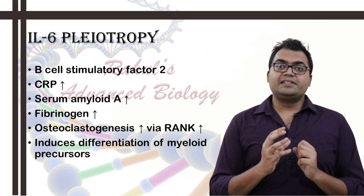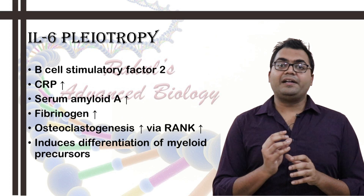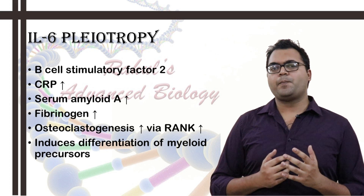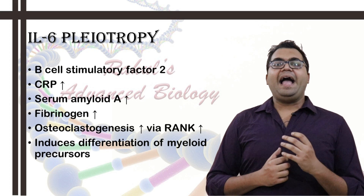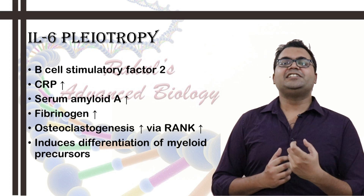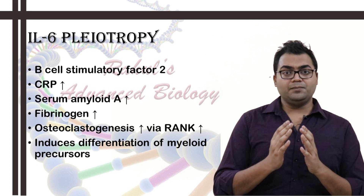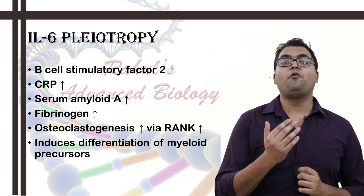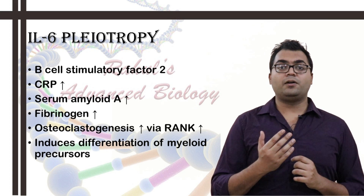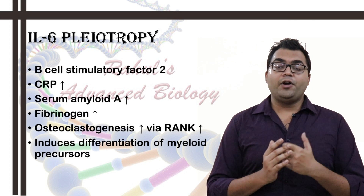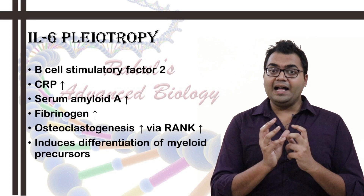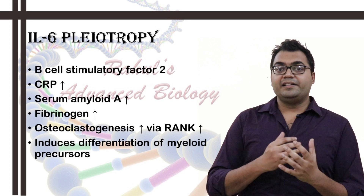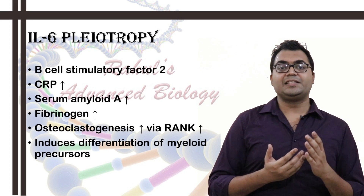How does it all begin? Interleukin-6 is at the epicenter of the cytokine release syndrome or cytokine storm. In the 1960s, scientists were baffled to find out about interleukin-6, and they also termed it the B-cell stimulatory factor 2. Some scientific groups also termed it interferon beta-2, which was a novel interferon at that point of time. But later on, scientists disagreed and vehemently proved that IL-6 doesn't possess any kind of interferon activity via experiments with IL-6 receptor antagonists.